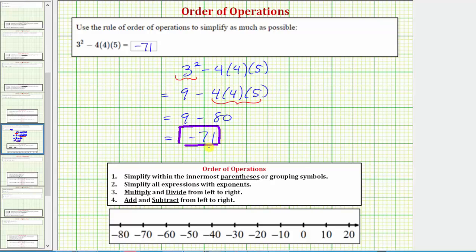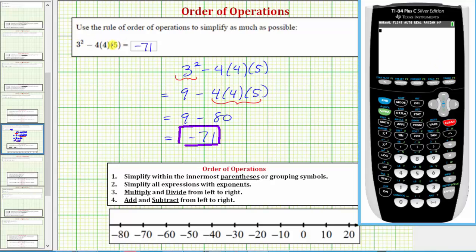Let's also verify this result on the graphing calculator. To do this, we simply enter the given expression. So we have three squared minus four times four times five. Enter, and this verifies our work is correct.